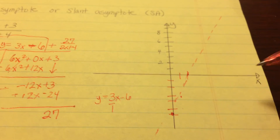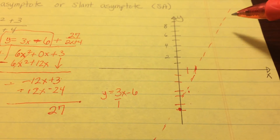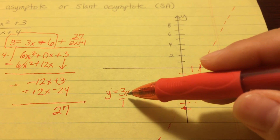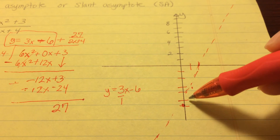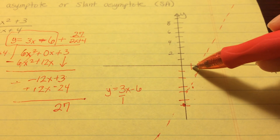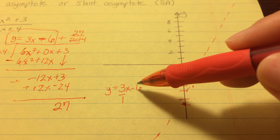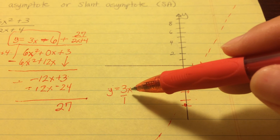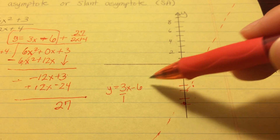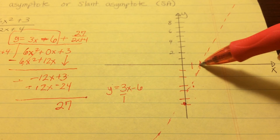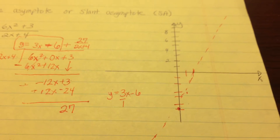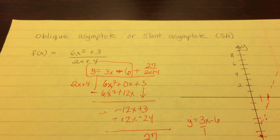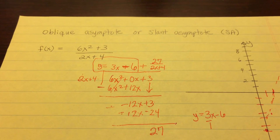If you can't figure out how to graph the slant asymptote, you can always substitute numbers in. Those are the three different types of asymptotes. The next part of the video should be how to graph rational functions.